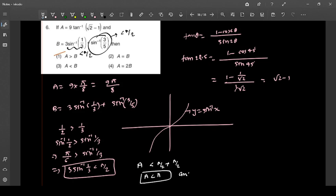Whereas A equals 9 pi by 8, which is greater than pi. So we can claim that, hence, A is greater than B. Oh sorry, not B greater than A, but A is greater than B.